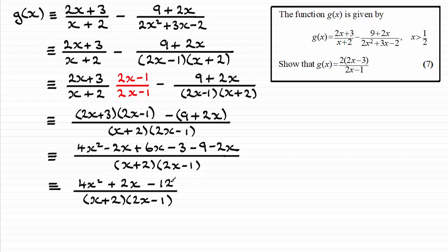And this quadratic factorises. The first thing I notice is it's got a common factor of 2. So I'd pull out that common factor of 2, giving me 2 lots of 2x squared plus x minus 6.